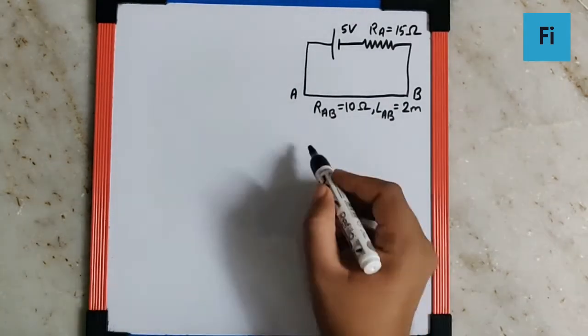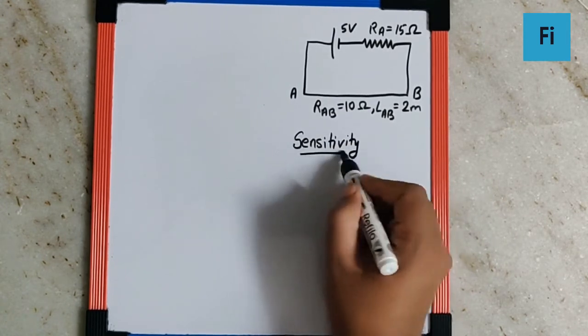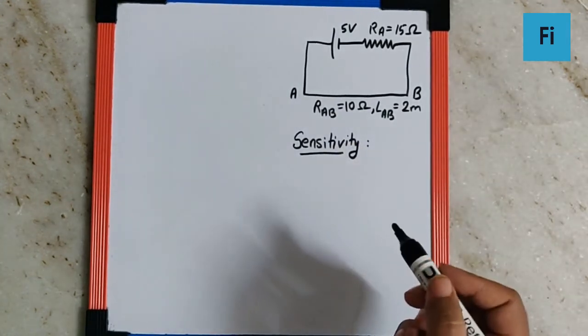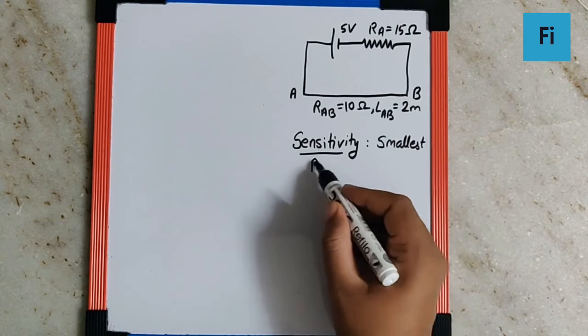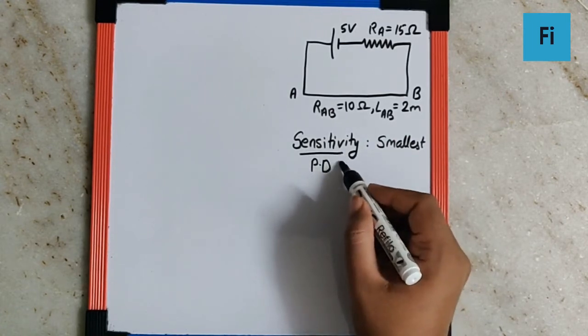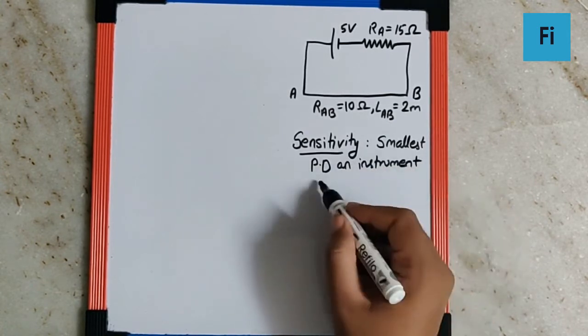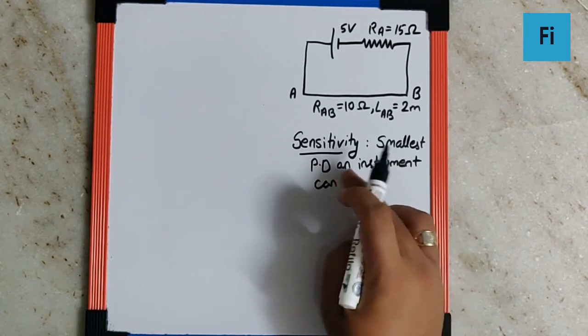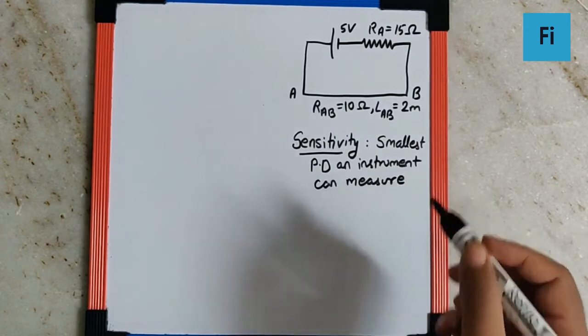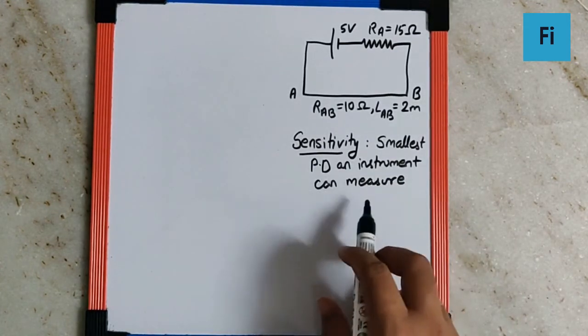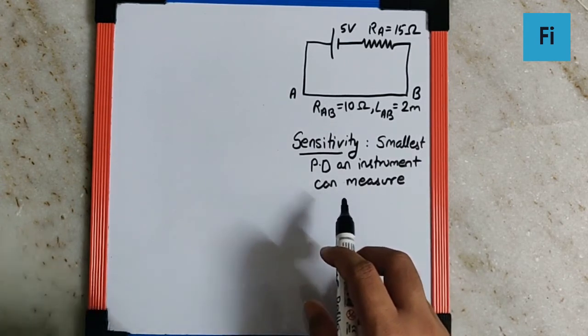Now they have used the word sensitivity. What is exactly the sensitivity for a potentiometer? It is the smallest potential difference an instrument, which is over here the potentiometer, can measure. Which means the smallest potential difference the instrument can measure is how sensitive that instrument is.